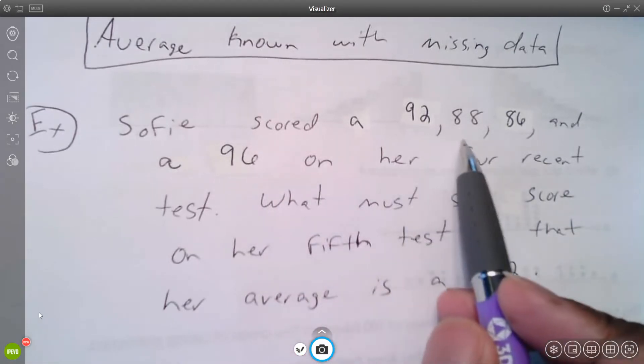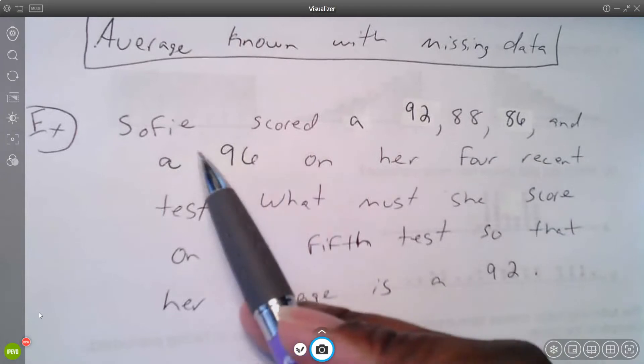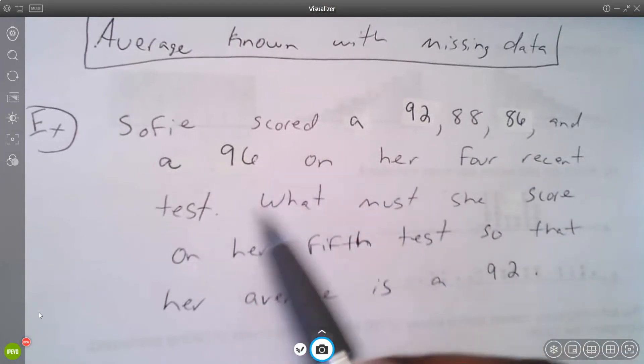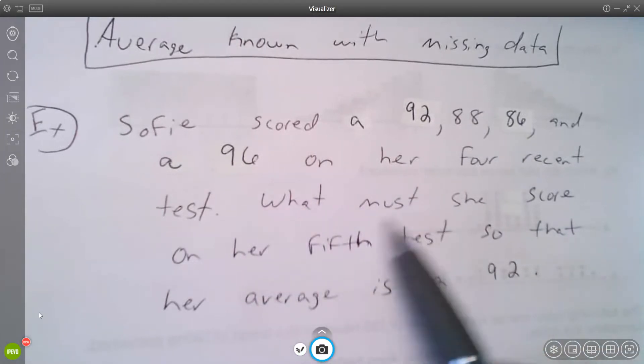...a 92, 88, 86, and a 96 on her four recent tests. What must she score on the fifth test so that her average is a 92?